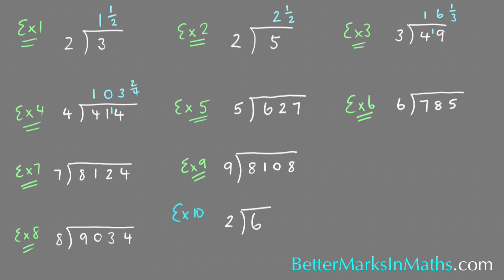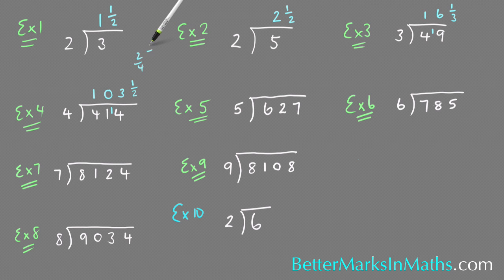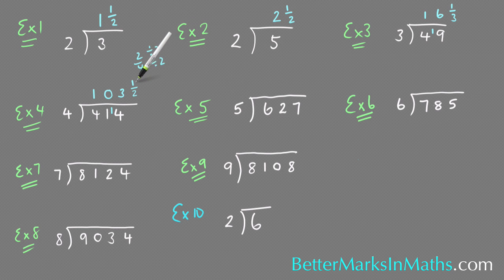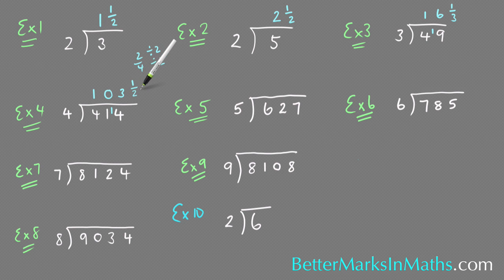So what you would really want to write as your answer would be 1 half, and that's just by taking 2 quarters and dividing both numbers by 2: 2 divided by 2 is 1, and 4 divided by 2 is 2. So how many 4s in 414? The answer is 103 and 1 half.